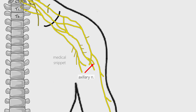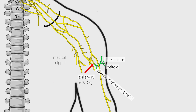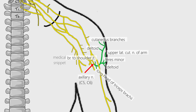The axillary nerve is a terminal branch of posterior cord. It consists of nerve fibers from C5 and C6 roots. It gives off anterior branch, posterior branch, and a collateral branch to the long head of triceps brachii muscle in some persons. The posterior branch supplies teres minor and posterior part of deltoid, and continues as upper lateral cutaneous nerve of arm. The anterior branch supplies the anterior part of deltoid and terminates into cutaneous branches to the anterior and anterolateral parts of the shoulder. The trunk of the axillary nerve gives off an articular filament which supplies the shoulder joint.